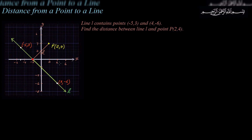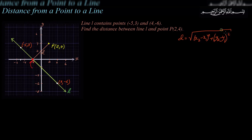To find the distance between two points, we use the distance formula. Once we know the point on the line where the perpendicular meets — let's call it the red point — we can find the distance using the distance formula: the square root of (x2 minus x1) squared plus (y2 minus y1) squared, or more simply, the square root of the change in x squared plus the change in y squared.